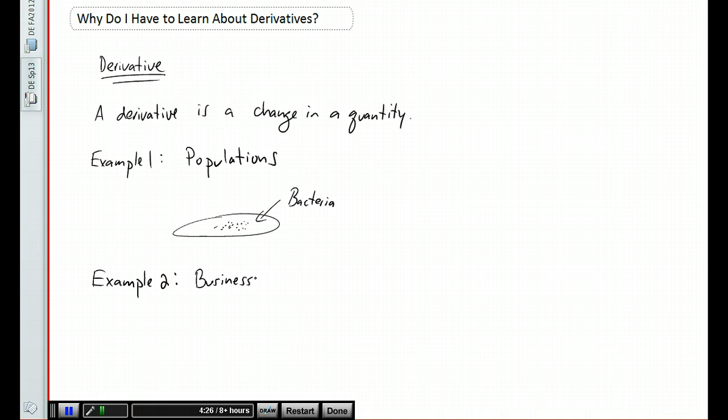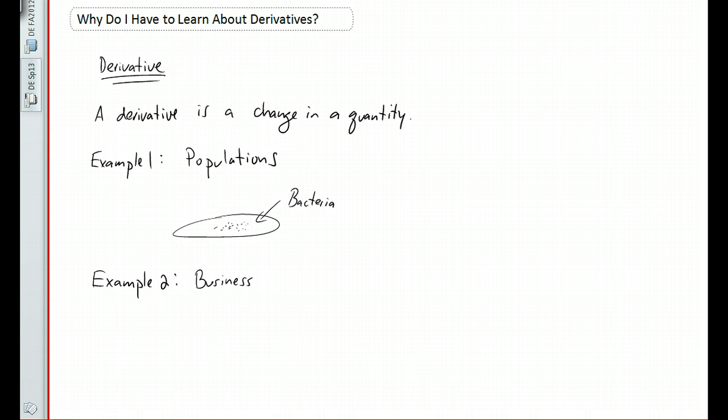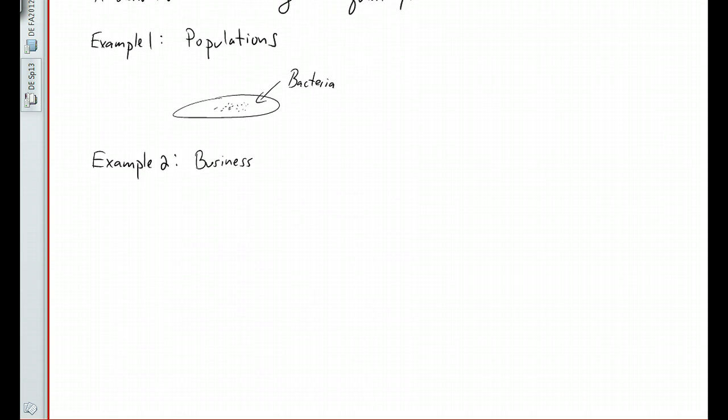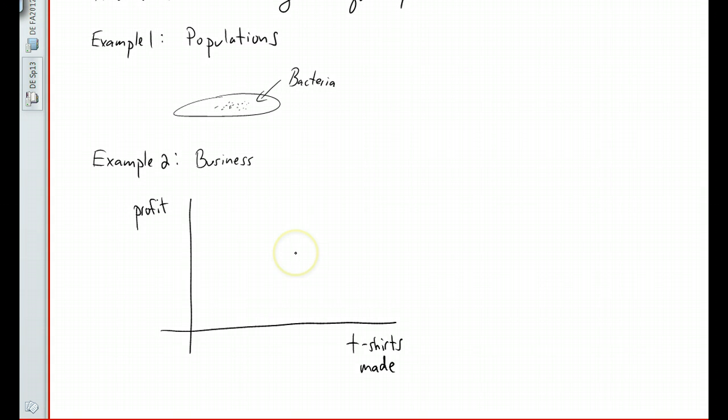For a second example, consider your business. Let's say you have a t-shirt business, and you would like to predict how much your profit is going to change versus how many t-shirts you manufacture. Notice I used that word again - change. You want to know how your profits are going to change, which implies we can do this using derivatives. You can set up a model, and depending on how good your model is, you can predict how your profits change versus how many t-shirts you made.